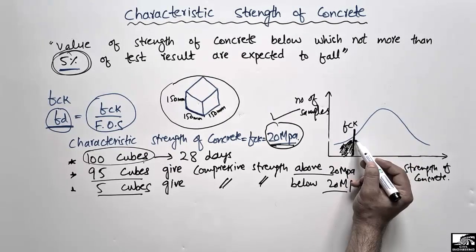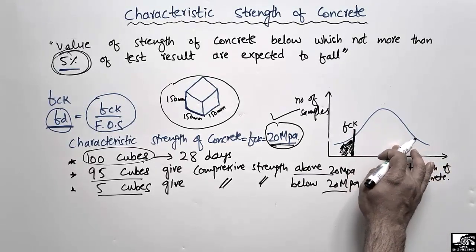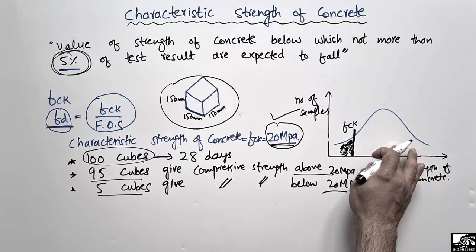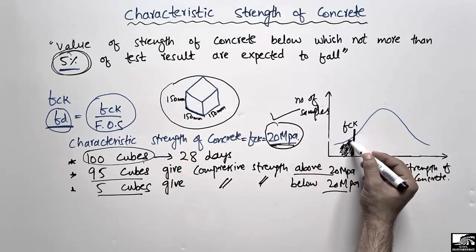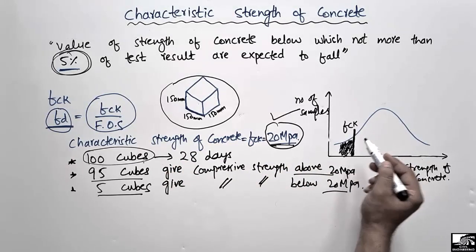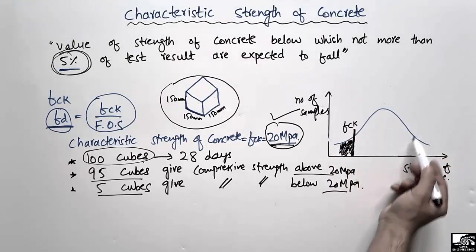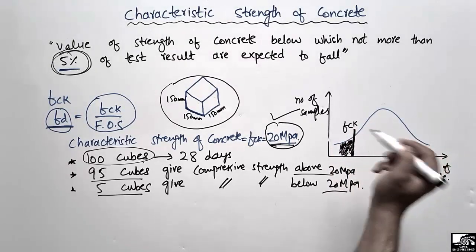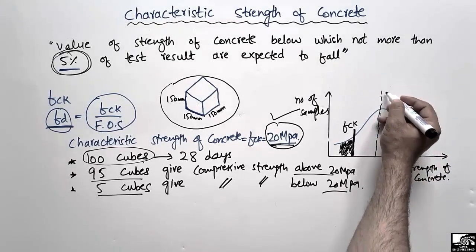Above this line, in the direction of higher values, we have strength values greater than FCK — that region represents more than 95 percent of results. Only five percent of the strength values fall in the lower area to the left of this line, while the remaining 95 percent fall in the area to the right.